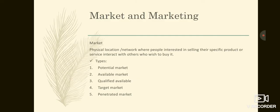Before going into what is a market: a market is a physical location or network of people interested in selling their specific product or service, in contact with others who wish to buy it.